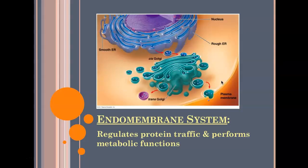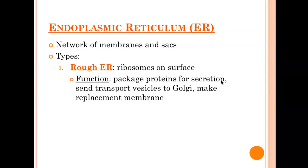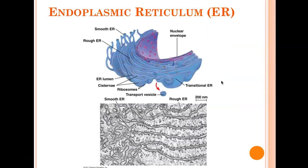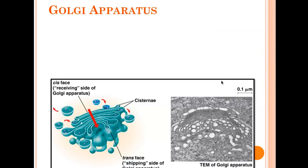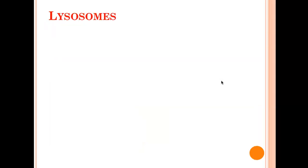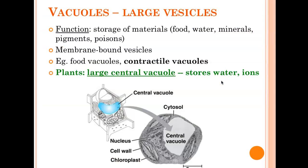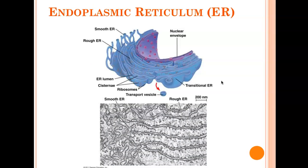Five components of the endomembrane system: the first one is the nuclear envelope, because the nuclear envelope attaches to the ER. So: nuclear envelope, ER, Golgi, lysosomes, and vacuoles/vesicles. A vacuole is a large vesicle. So that was nuclear membrane, ER, Golgi, lysosomes, vacuoles, vesicles.